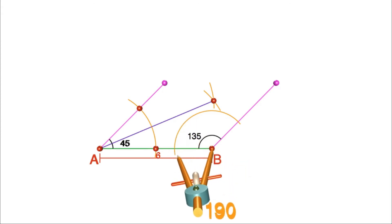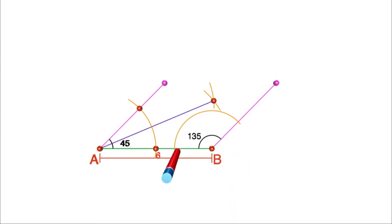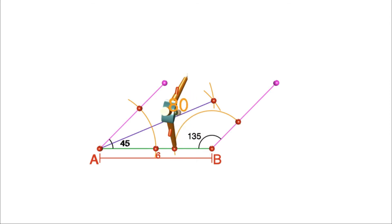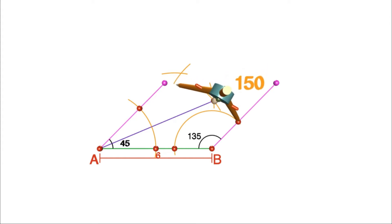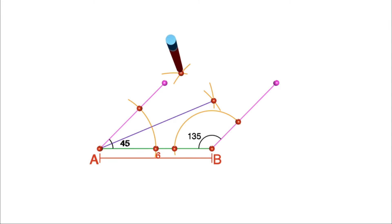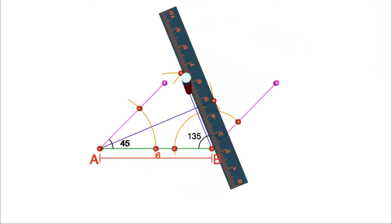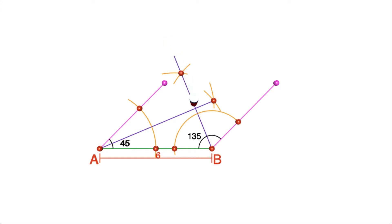Put the compass at B and draw an arc. Mark the points of intersection of this arc with the sides of the angle. From these two points, draw arcs of the same radius. Mark the point of intersection and join it to B. That is the bisector of angle B, and thus we get 67 and a half degrees at B.